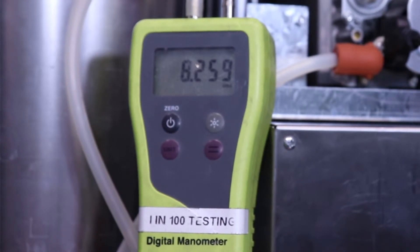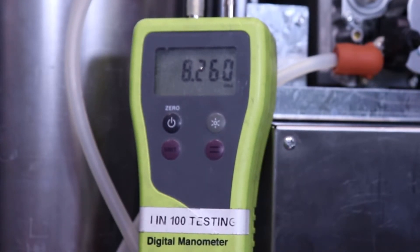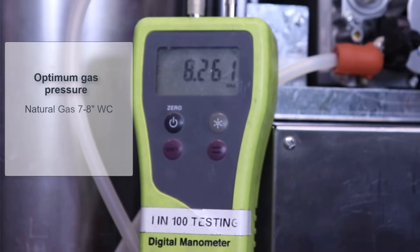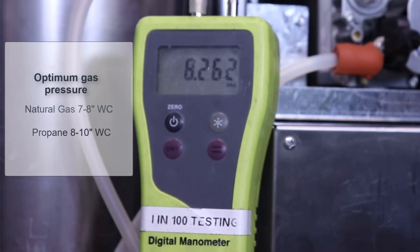The optimum gas supply pressure for the SL series boilers is 7 to 8 inches for natural gas boilers, 8 to 10 inches water column for propane boilers.